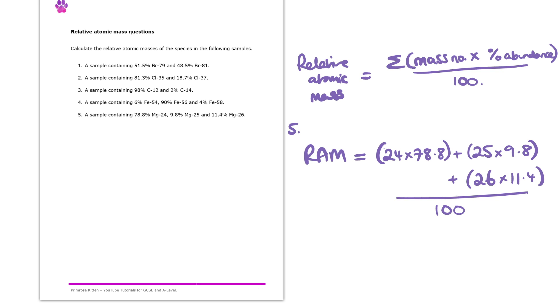So if we tap that into the calculator I end up getting my answer for that to be 24.326 and that there is going to be the relative atomic mass of this particular sample of magnesium.